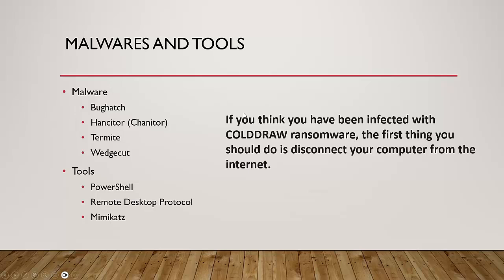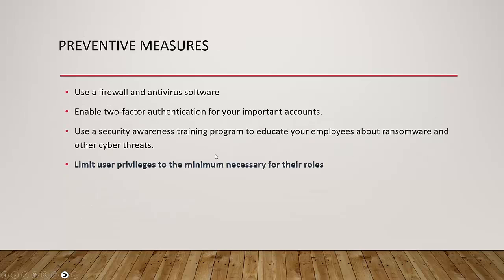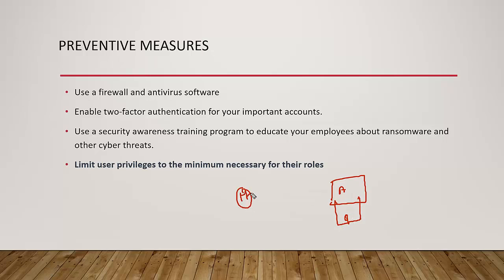If you think you've been infected with COLDDRAW ransomware, the first thing to do is disconnect your computer from the internet. Countermeasures include: enable a firewall, enable two-factor authentication, and conduct security awareness training — because even with great security solutions, if an employee clicks one malicious link it can create a reverse shell. Limit user privileges to the minimum necessary for their role. For example, if a current user is logged in as administrator and clicks a malicious link, it creates a reverse shell with admin privileges, giving hackers full access.